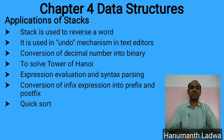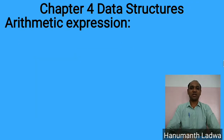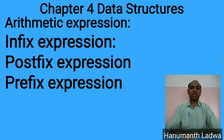Quick sort is one of the sorting mechanisms in which we arrange all elements in either ascending or descending order. Stack is also used in runtime memory management. Now, an arithmetic expression involves both operands and operators. Arithmetic expressions consist of five different operators: plus, minus, multiplication (denoted by asterisk), integer division (denoted by forward slash), and modular division (denoted by the percentage symbol).